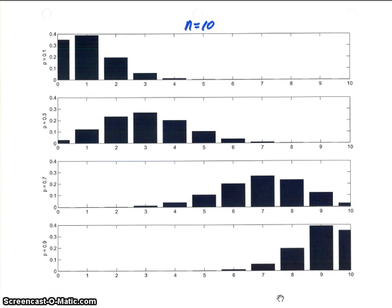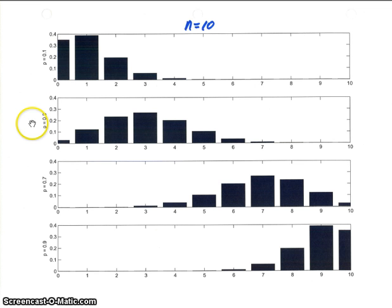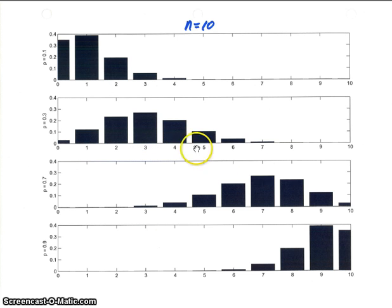I've plotted some graphs for different binomial distribution functions. In all of these graphs, I have the same number of trials — 10 trials — and for each one a different probability of success. The probabilities are written on the left: the first is 0.1, the second is 0.3, the third is 0.7, and the last is 0.9. Notice how the peak shifts from one side to the other.